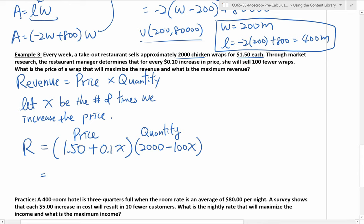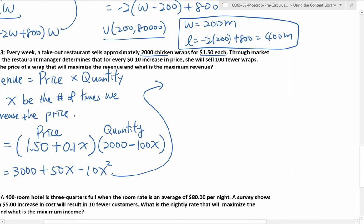So now I can expand. 1.5 times 2,000 is 3,000. 1.5 times negative 100X is negative 150X. 0.1X times 2,000 is plus 200X, so that gives plus 50X. 0.1X times negative 100X is negative 10X squared. Rearranging, I get negative 10X squared plus 50X plus 3,000. Now I need to complete the square because we're looking to maximize the revenue — we're looking for the vertex.